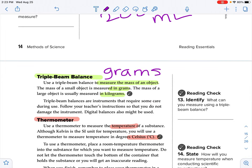Alright, triple beam balance is going to be grams. Use a triple beam balance to measure the mass of an object. The mass of an object is measured in grams. The mass of larger objects is usually measured in kilograms. So mass is the amount of matter in an object, so the amount of stuff in that object. It is not the same as weight. Weight is dependent on gravity. But the mass doesn't change regardless of where you are in this universe. We'll talk a little bit more about that when we talk about space, that the mass of that astronaut is the same regardless if they're on the space station or whether they are on Earth. But their weight is going to be different based on the gravitational pull. So when we are using the triple beam balance, we are measuring the mass of that object. Triple beam balances are instruments that require some care during use. Follow your teacher's instructions so that you do not damage the instrument.